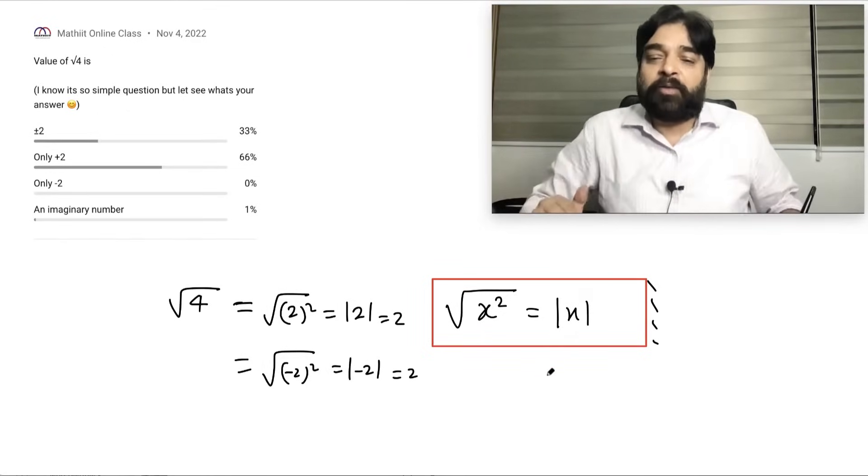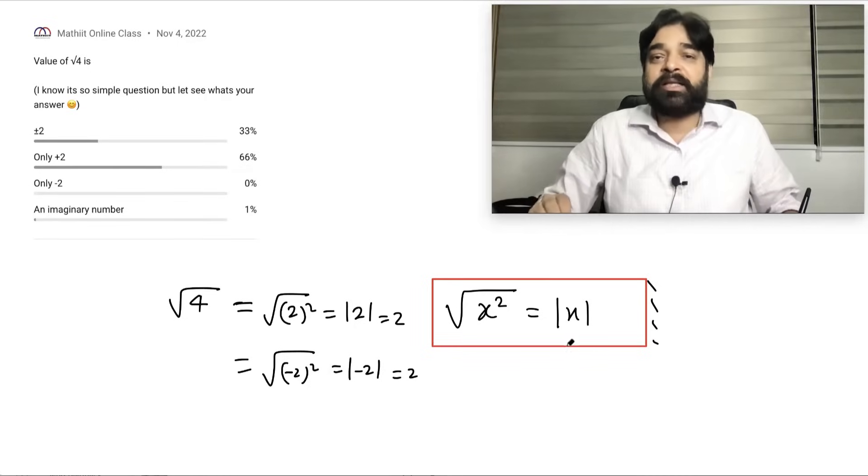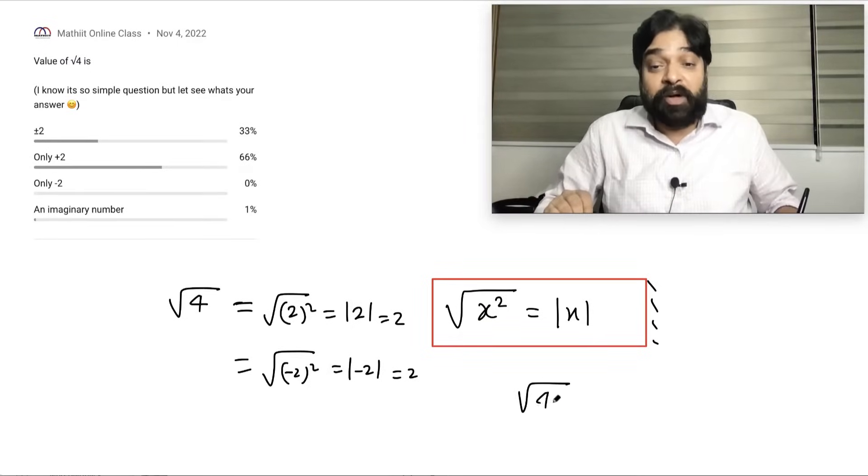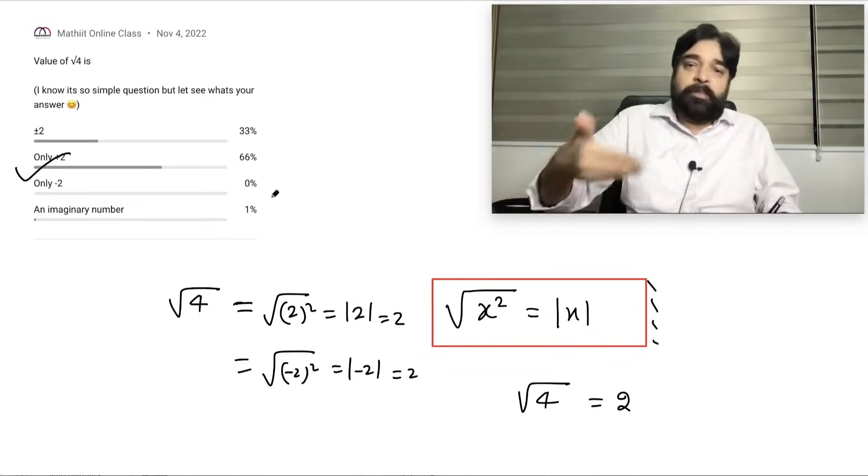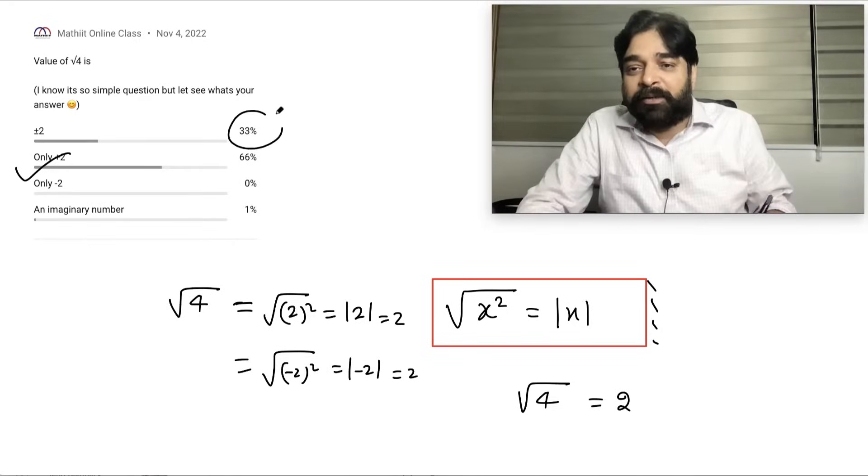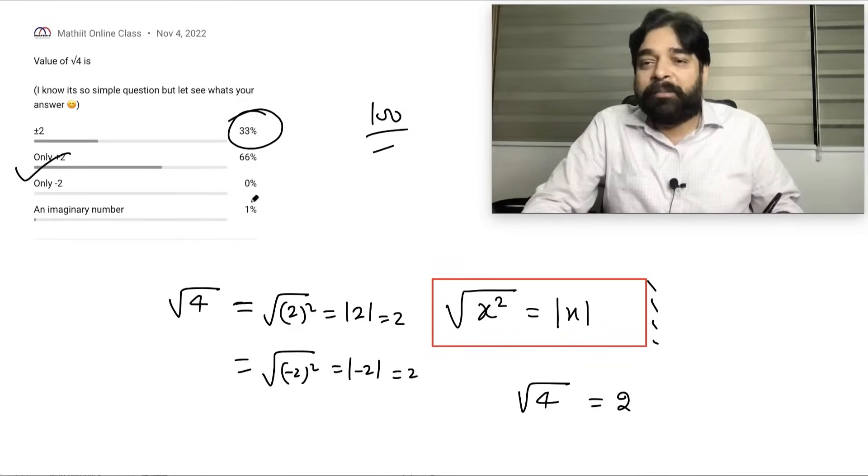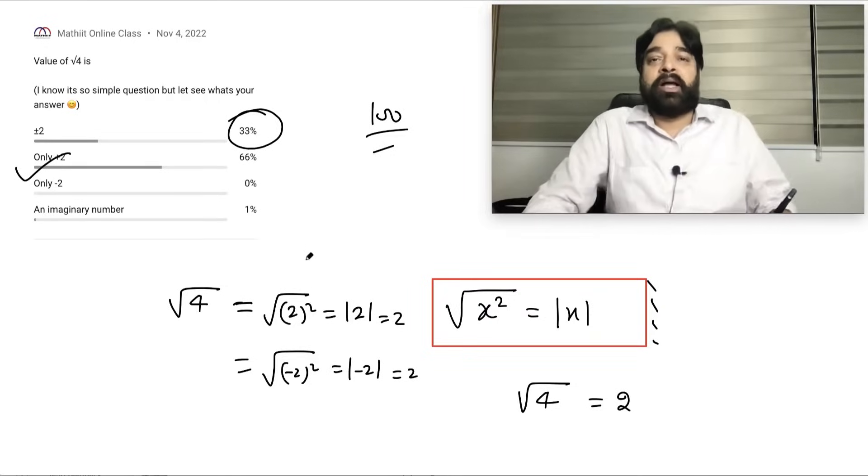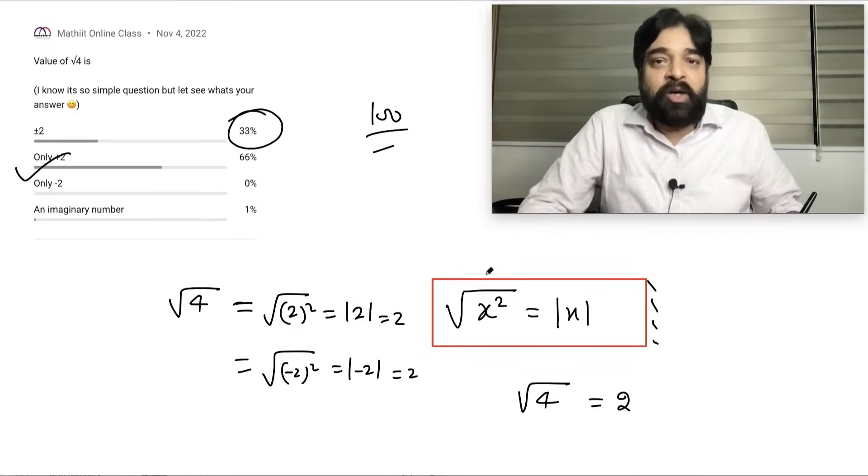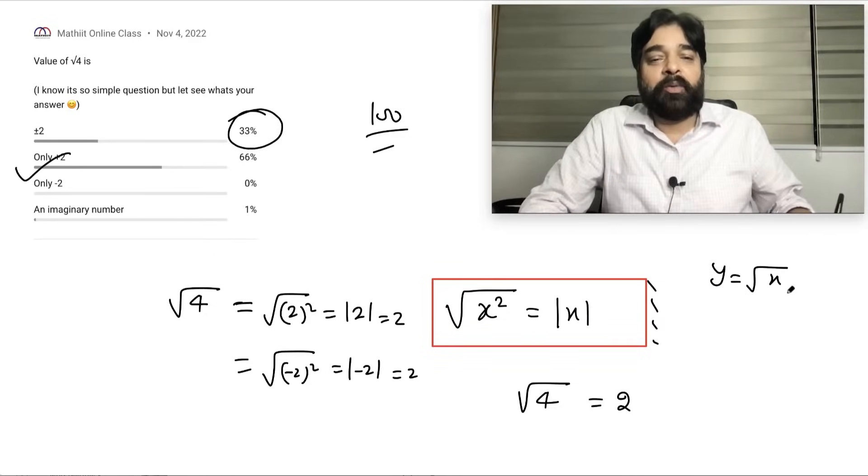So always remember square root of x square is always mod x, it is never be x. That is why square root of 4 is only plus 2. So answer will be only plus 2. Of course maximum people given the correct answer but there are few people. This data I have taken on the basis of around 100 votes. So out of that you can see there are few people, around you can say 30 people are there who are still saying plus minus 2. It is not plus minus 2, it is only plus 2.